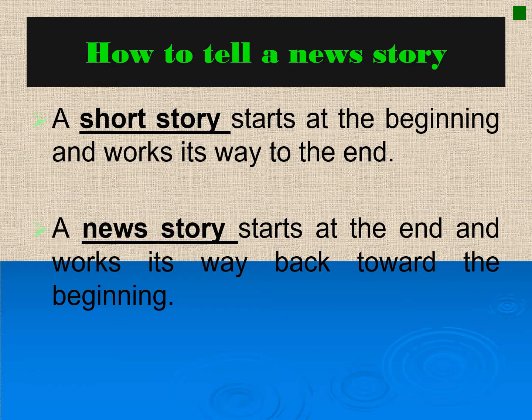A news story, on the other hand, starts at the end and works its way back toward the beginning. This means that a news story focuses on the outcome or the last event in a particular story, and later develops the story using chronological order — how the events happened one at a time.